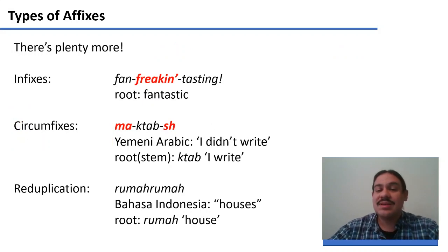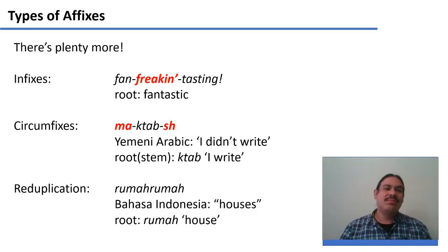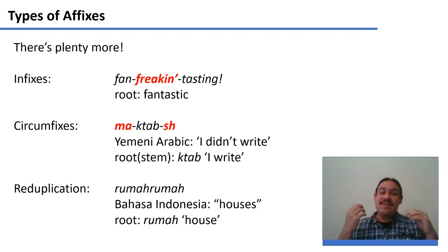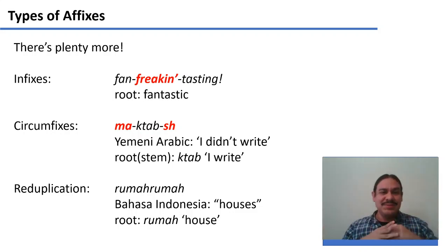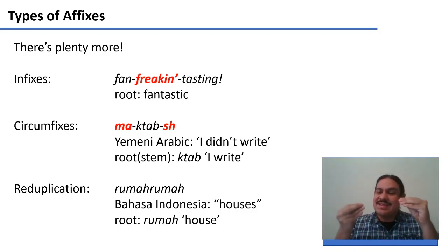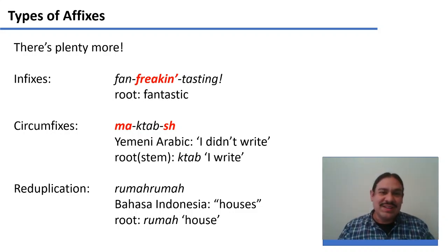There are other types of affixes. English has a kind called an infix — you take a root, break it in half, and put the affix right in the middle. For example, in 'fan-freaking-tastic,' you have the root 'fantastic,' which is really just one unit, but you split it and insert 'freaking' right in the middle. Another example is 'fan-bloody-tastic.'